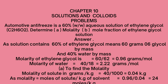If we consider 1000 grams of solution, then 60 grams per 100 grams scales to 600 grams of ethylene glycol. And 40% water by mass means that out of 100 grams of the solution, we take 40 grams of water, so for 1000 grams or 1 kg of solution, we have 400 grams of water.